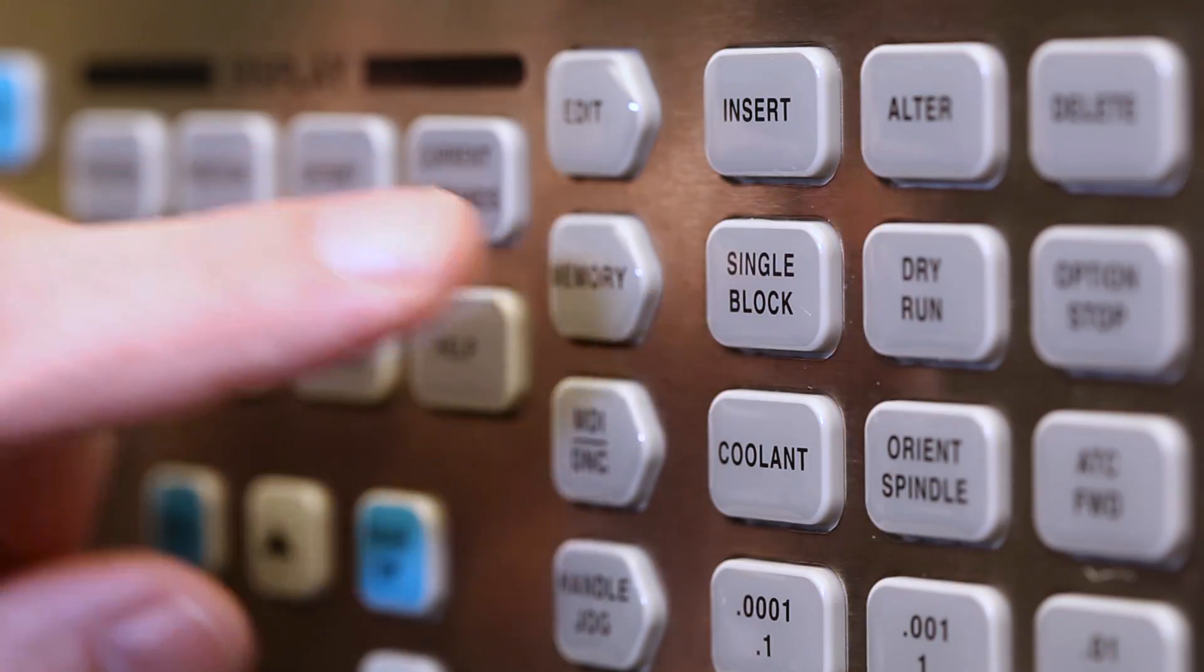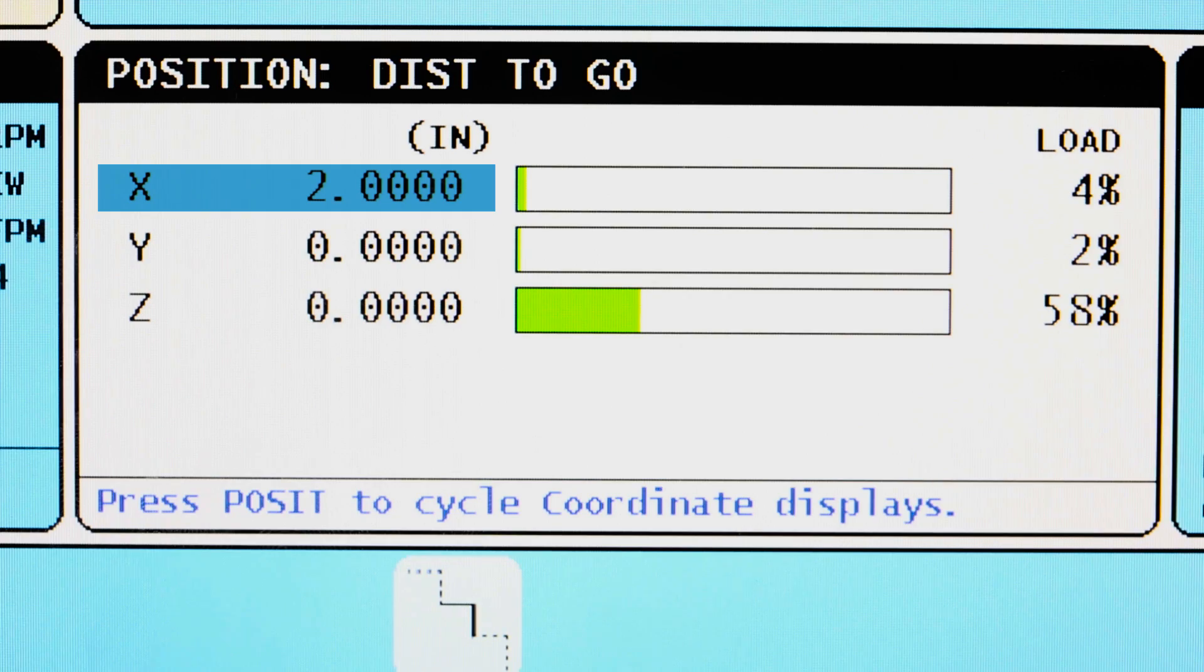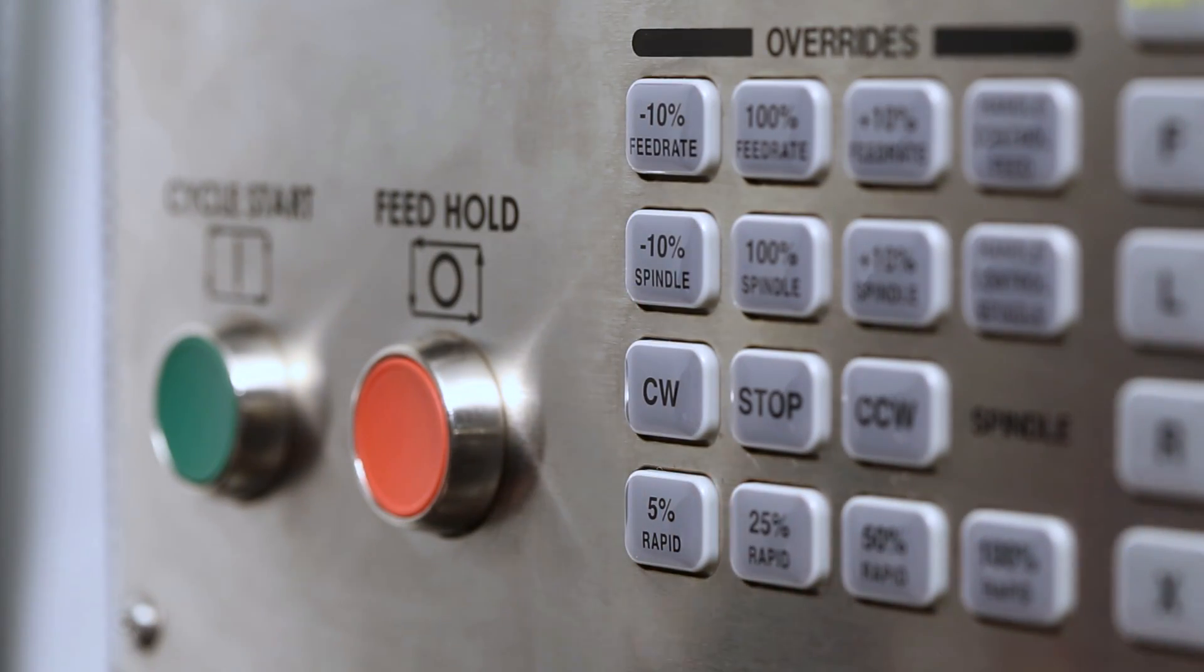But right now, what we really want to impart to you, what we want to impress you with, is that a combination of single block, looking at our position distance to go screen and lowering our overrides to slow things down, can help us avoid crashes like the one we saw in slow motion earlier.